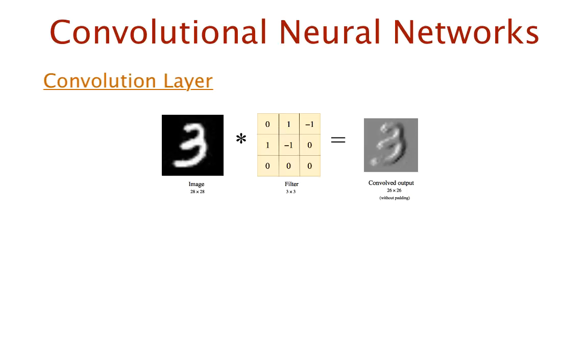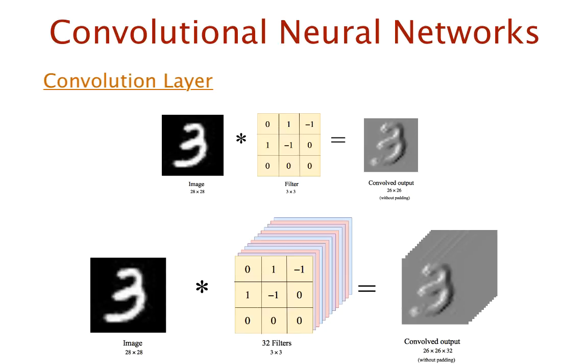Now, if we apply, say, 32 such filters on the image, then we'll end up with 32 such 26 x 26 feature maps. These are stacked along their depths to create an output volume. In this case, of size 26 x 26 x 32. This will be the feature map I mentioned earlier.